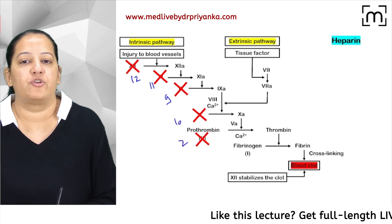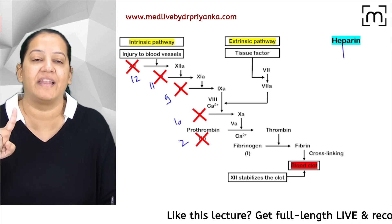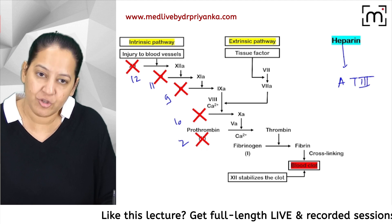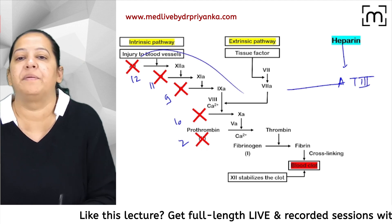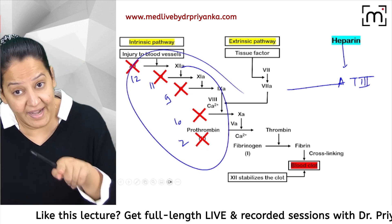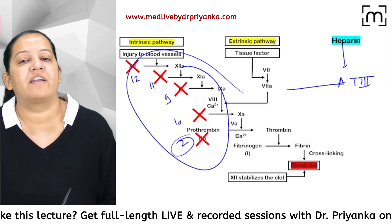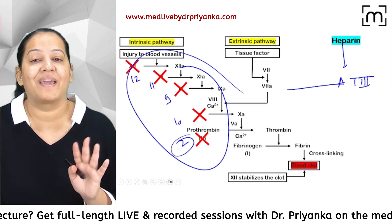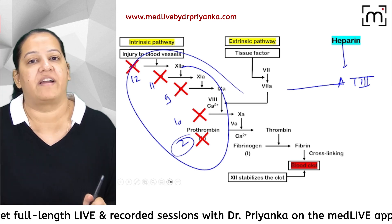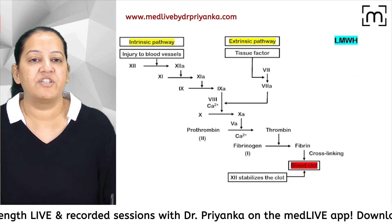Heparin inhibits five coagulation factors: 12, 11, 9, 10, and 2. It does so indirectly — heparin activates antithrombin 3, and antithrombin 3 then inhibits these five factors. It mainly inhibits factor 2 but inhibits all five overall.